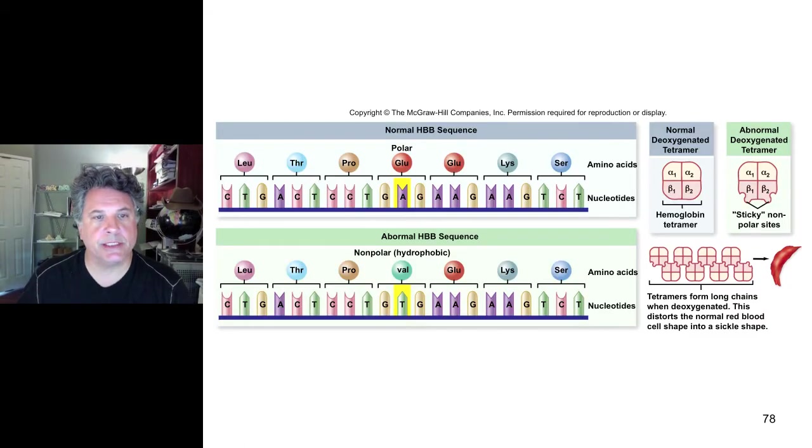Having discussed point mutations in general, let's look at a very famous case of a point mutation that results in a particular disease, namely sickle cell disease. The normal hemoglobin B, the beta hemoglobin amino acid sequence is shown here with the corresponding codons found in the normal allele of that hemoglobin B gene.